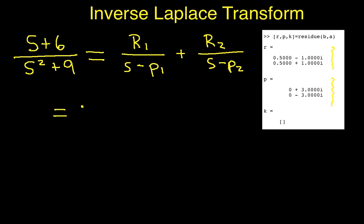R1 is 0.5 minus J, so 0.5 here, and minus 1 times I, which again if you're an engineer is really J, plus 0.5 plus J over S minus 3J. That's what we have down here, plus 0.5 plus J over S plus 3J. Okay, so so far so good, hopefully.